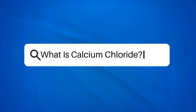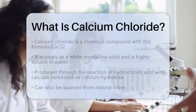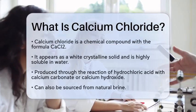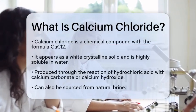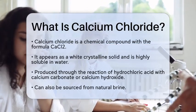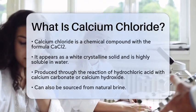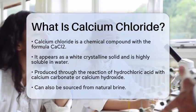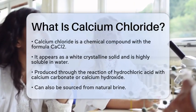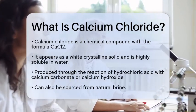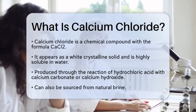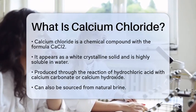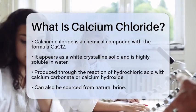What is calcium chloride? Imagine a substance that can melt ice on a cold winter day, keep your road safe, and even help in food preservation. This substance is calcium chloride, a chemical compound with the formula CaCl₂. It is a white crystalline solid that is highly soluble in water.